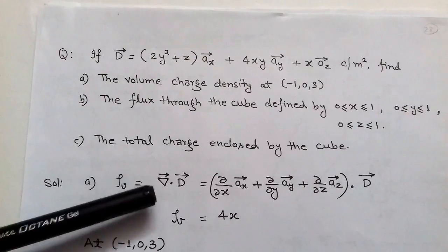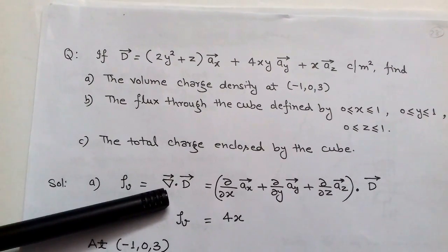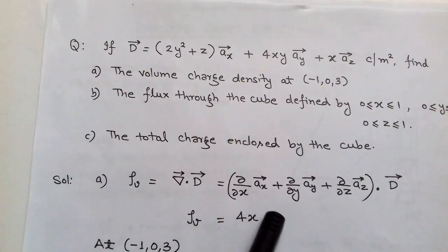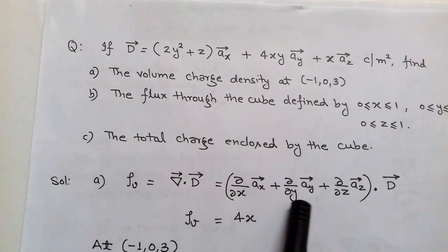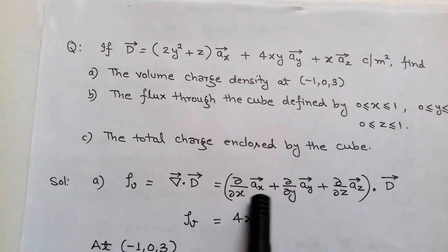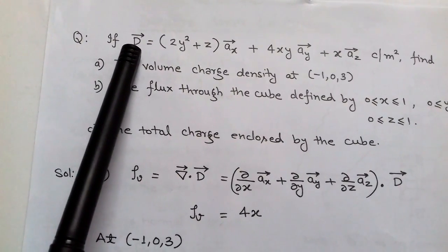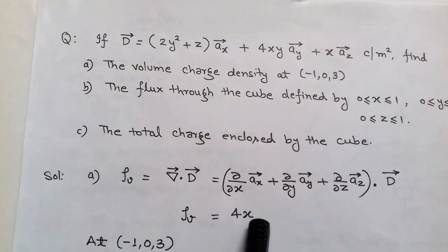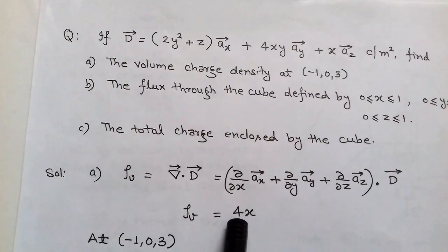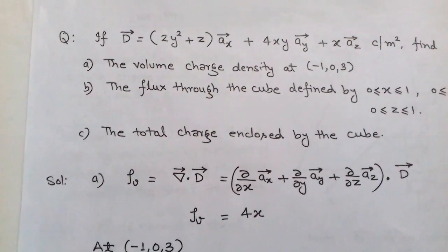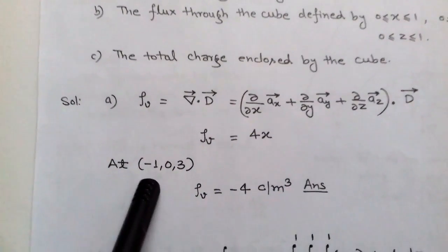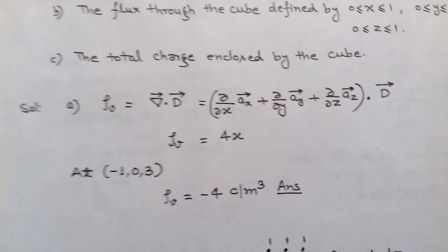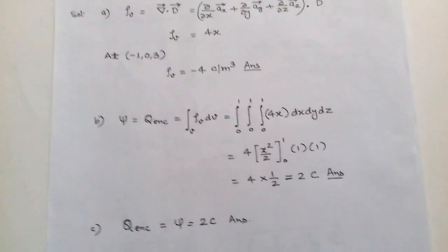For part (a), the volume charge density ρv equals the divergence of D by Maxwell's equation, that is ρv = ∇ · D. Applying the divergence formula to the given D vector with its x, y, and z components, we get ρv = 4x. At point (-1, 0, 3), substituting x = -1, we get ρv = -4 coulombs per meter cubed.